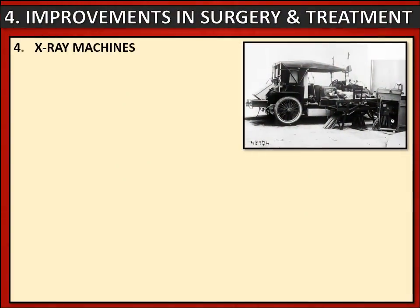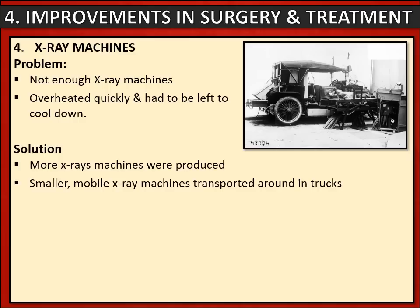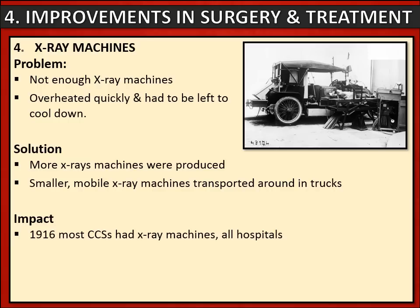Another area that improved was x-ray machines. At the start of the war there just weren't enough x-ray machines, and those they did have tended to overheat really quickly and had to be left to cool down, meaning it wasn't possible to x-ray many soldiers. Solutions had to be found. The first was that governments had to produce and buy more x-ray machines. Another was that they found a way of making x-ray machines mobile by transporting them around in trucks. The impact was that by 1916, most casualty clearing stations had their own x-ray machines, and all base hospitals did as well. This meant more soldiers could receive an x-ray, so fragments of bullets and shrapnel could be located in their bodies and removed very quickly.